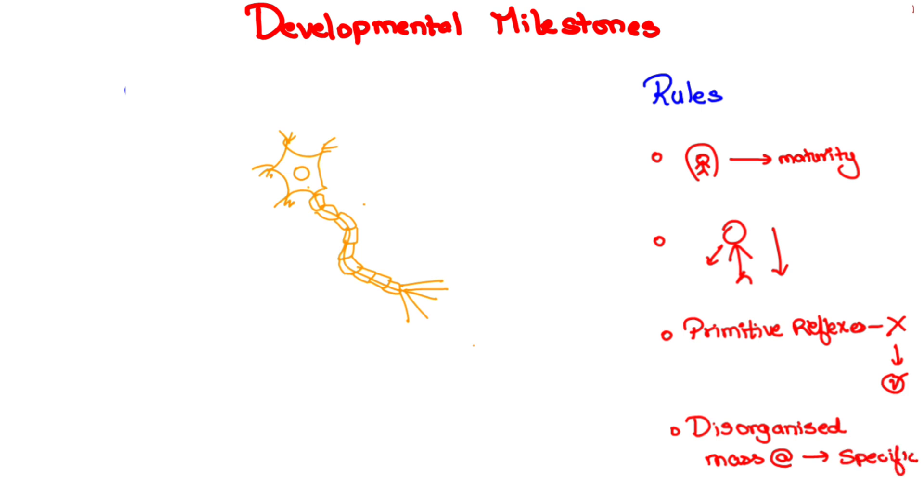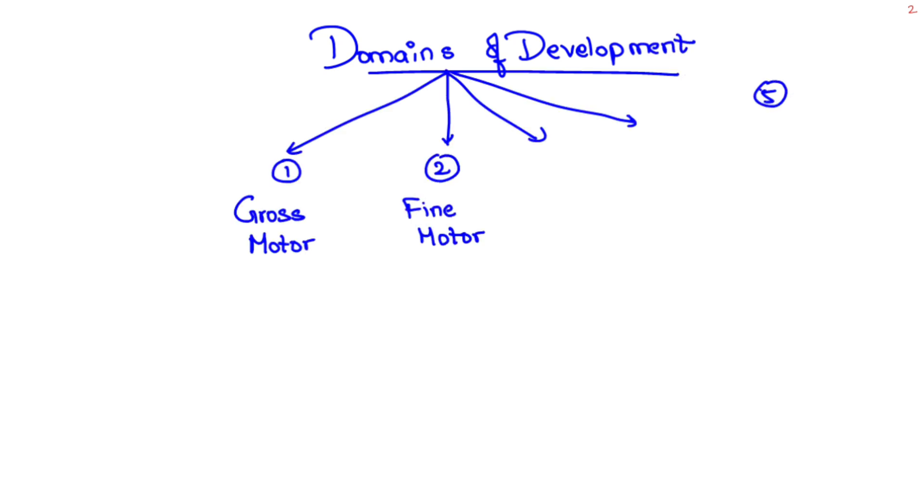For example, as a baby matures, instead of using both hands for taking a ball, it will use a single hand. Next, domains of development: there are actually five - gross motor, fine motor, language, social, cognitive or vision and hearing. Let us focus on first four domains.